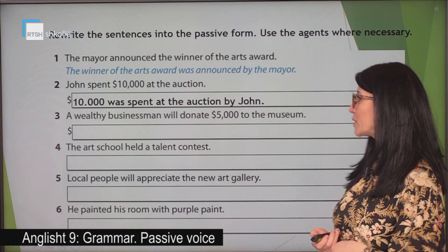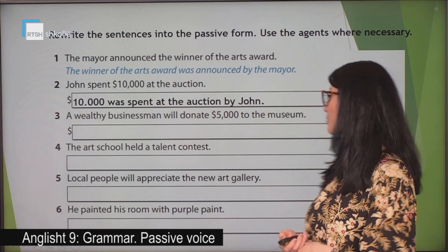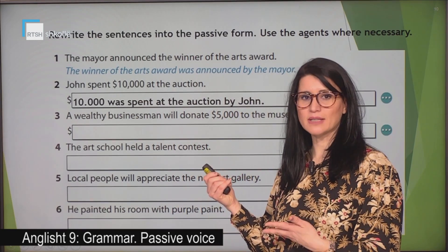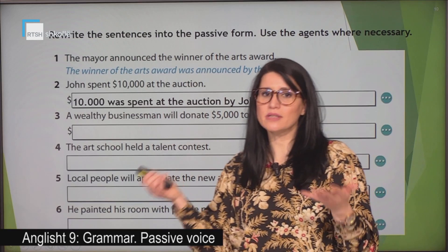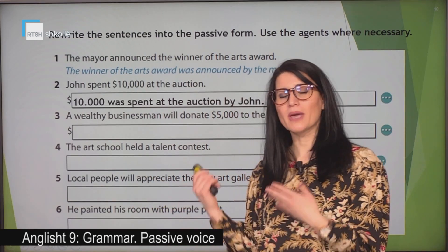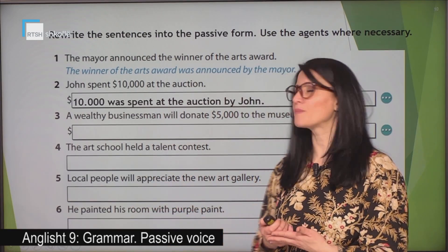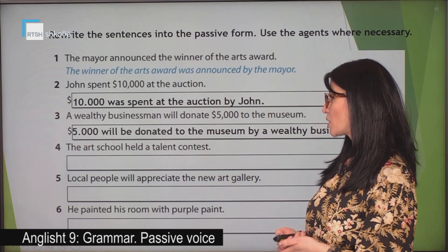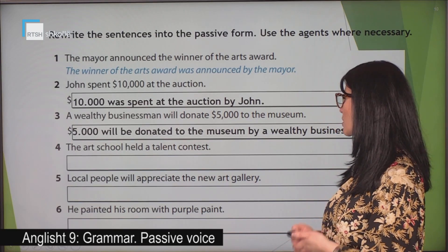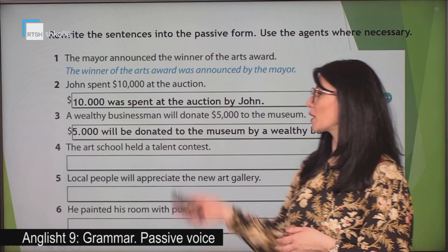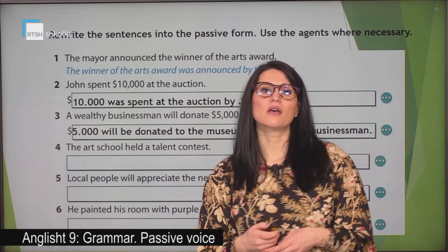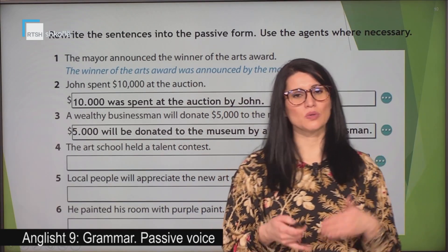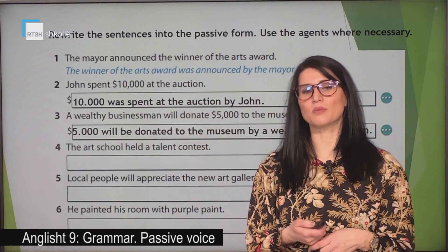A wealthy businessman will donate $5,000 to the museum. What is the object of the active sentence? We need to make it the subject of the passive sentence — it is $5,000. $5,000 will be donated to the museum by a wealthy businessman. As we can see, the verb is in the future, so in the passive we have used 'will be' plus the past participle of the verb.